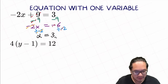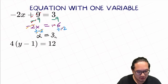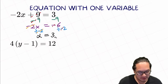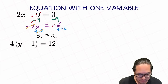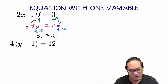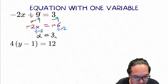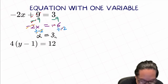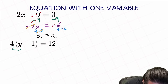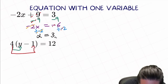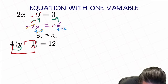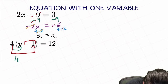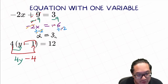The next one: we have 4 times the quantity (y minus 1) equal to 12. There are two ways to do this question. One, you can distribute the parentheses based on PEMDAS rule. The other, just move the 4 out by dividing first to make it simpler. I'm going to do both examples. Using the distribution method first: 4 multiplied by y and 4 multiplied by negative 1. This changes to 4y minus 4, equal to 12.